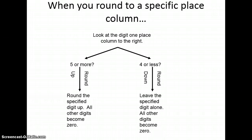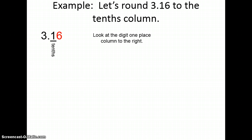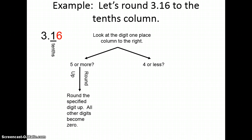Let's give an example. Let's round three and sixteen hundredths to the tenths column. I'll look at the tenths column and underline it, and I like to circle the digit to the right to remind me it will become a zero. I look at the digit one place to the right and ask: is it five or more? In this case it is, so I round up — the one in the tenths place becomes a two, and all digits after that become zeros. So the answer is three and two tenths.